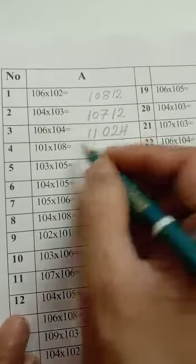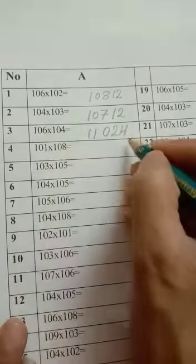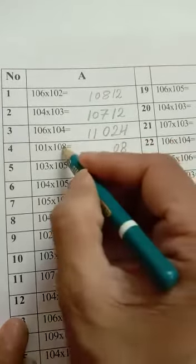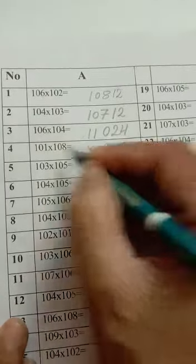Question number 4: 101 multiply by 108. 8 1s are 8. Here is single digit, then 10. 8 plus 1 is 109. Answer is 10908.